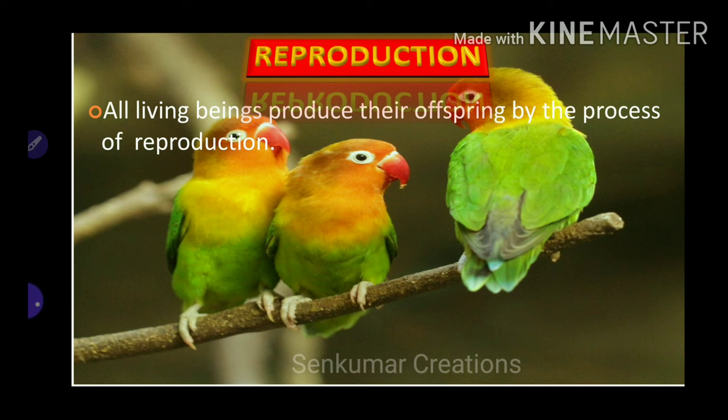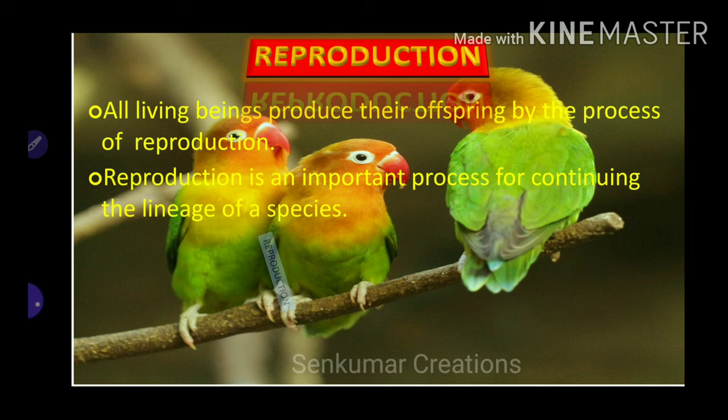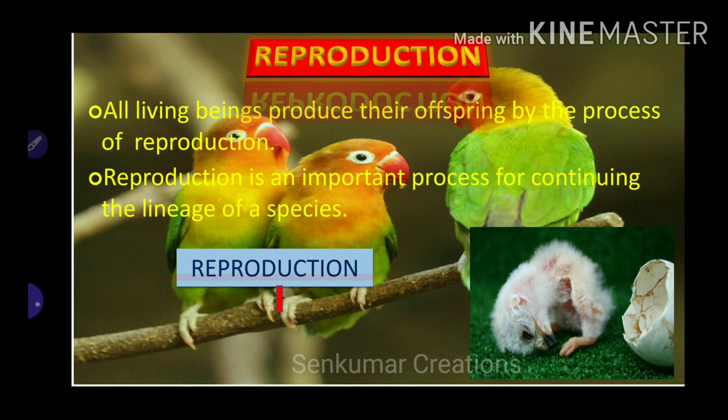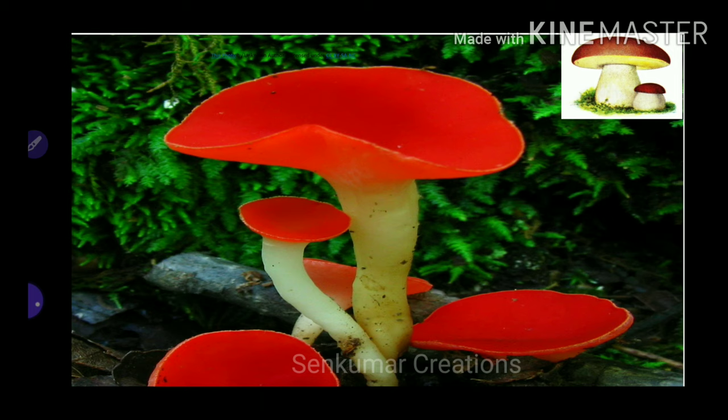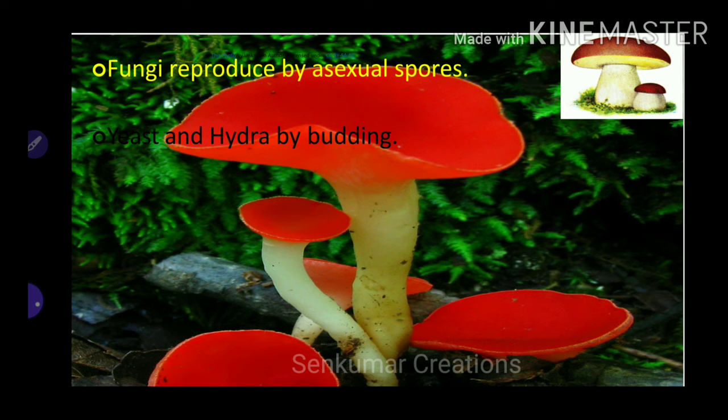Next is reproduction. All living beings produce their offspring by the process of reproduction. Reproduction is an important process for continuing the lineage of a species. Reproduction can be classified into two types: sexual and asexual reproduction.